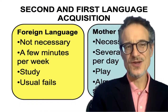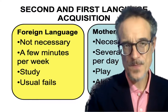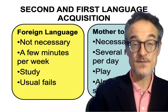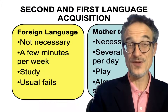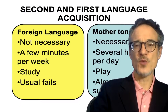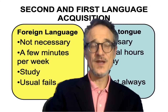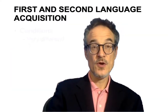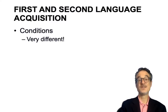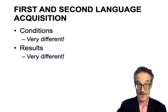And usually foreign language acquisition fails. Most people who spend months and years studying a foreign language, at the end of it, they don't really feel that they can speak or use the language very well. So unfortunately, compared to the mother tongue — which is almost always successful — very often foreign language acquisition fails. We can see there is a big difference between first and second language conditions: the number of hours we study, the situation we study in, is very different. The results are also very different.